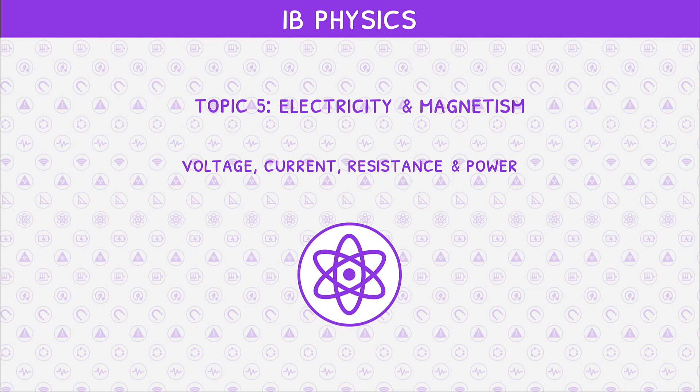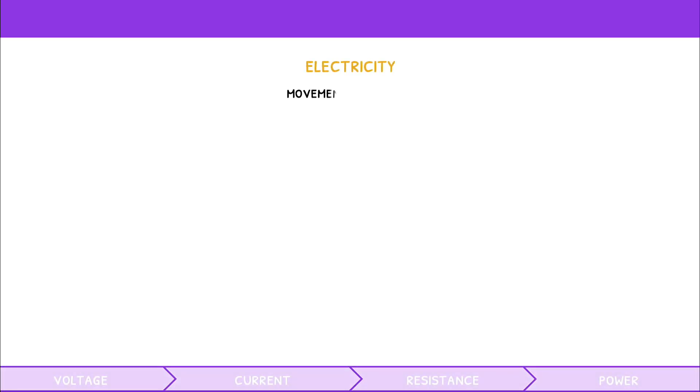In our previous video we learnt about charges and electric fields, but how are these related to electricity? Well, electricity is the movement of charge which can be described by voltage, current and resistance.